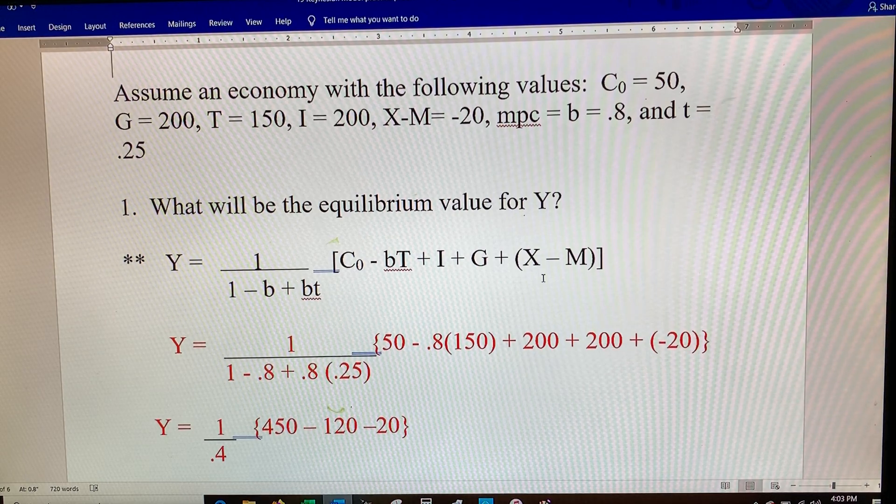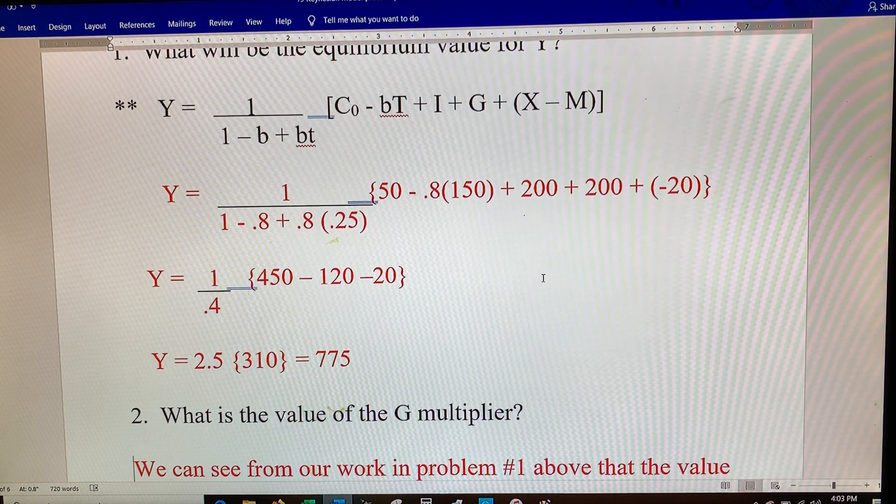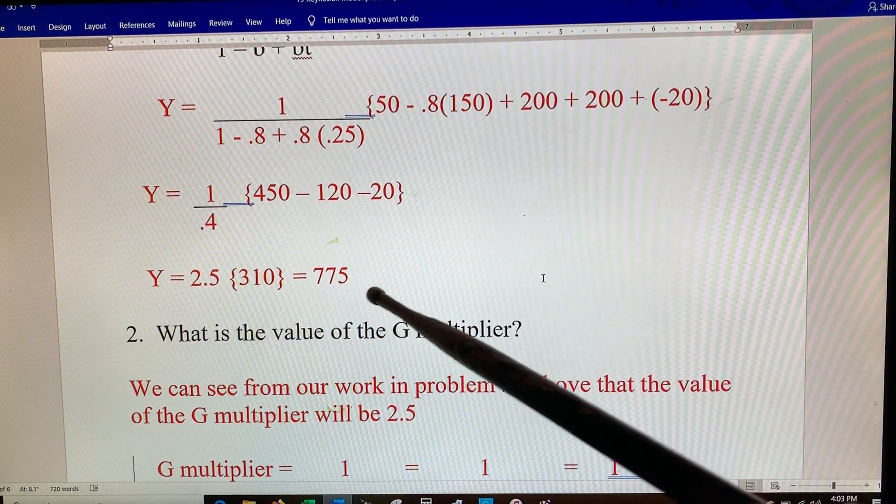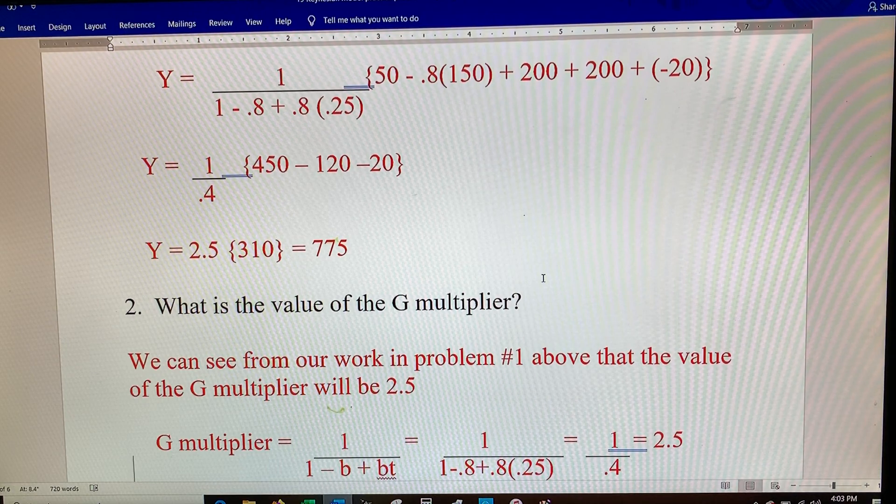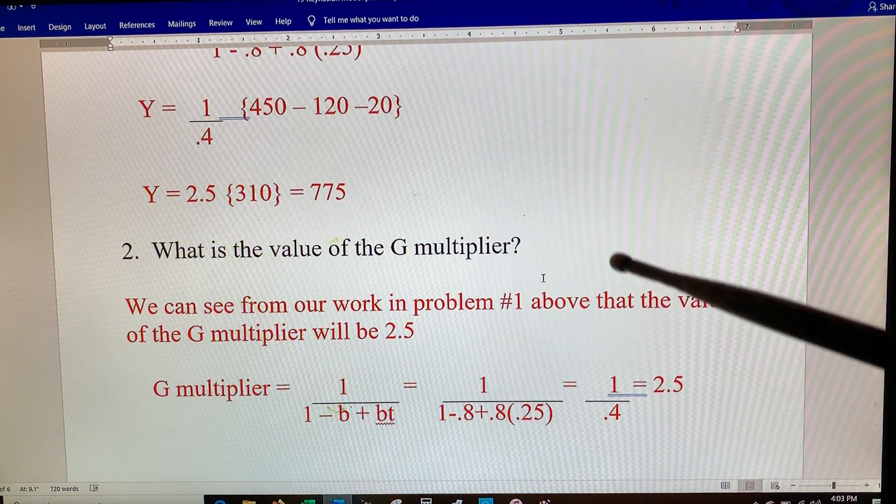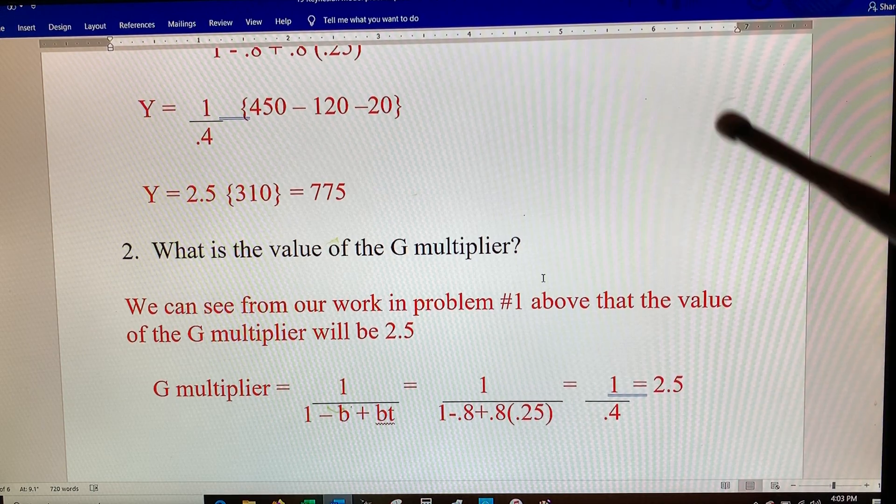So I plug them in and we get a solution for Y of $775. So that's our GDP. Then the G multiplier, what would be the value of it? What's the thing out in front? 2.5.